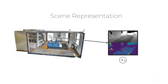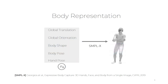In a 3D scene, we set up a camera and record the depth map and semantic segmentation from that camera view. At the same time, we represent the human body by several parameters. With these parameters, we can use the SMPL model to obtain a body mesh. Since SMPL is differentiable, the constraints applied on the body mesh can update these body parameters.